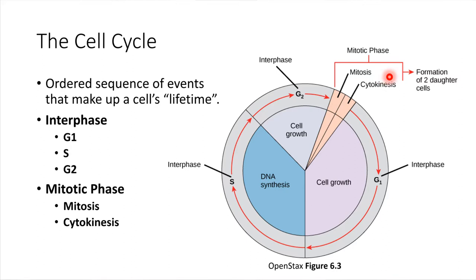Cytokinesis is division of the cytoplasm and its contents. And once those two things are complete, what we end up with are two what are called daughter cells. We started with one parent cell and we've now ended up with two daughter cells.